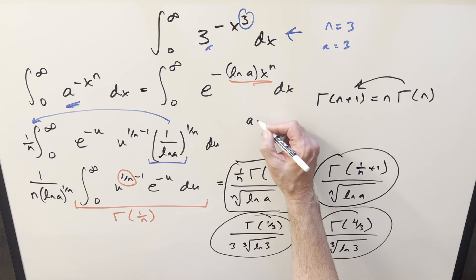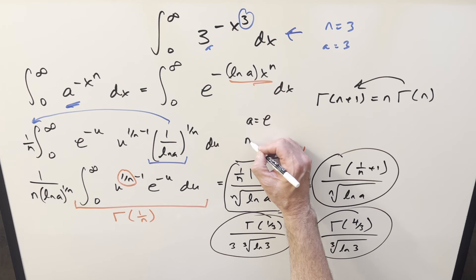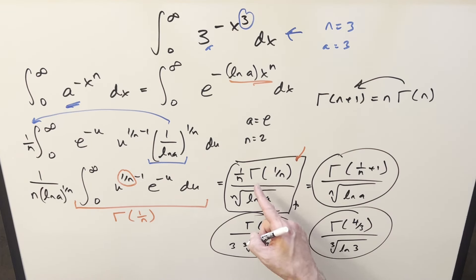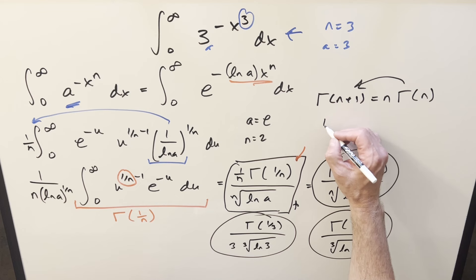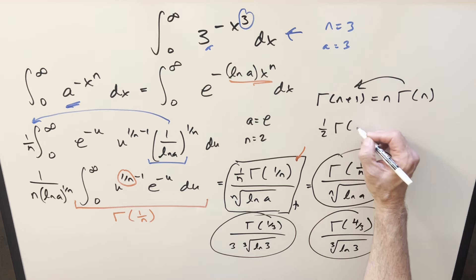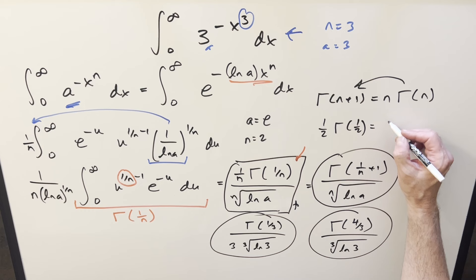And so actually for the case of just the Gaussian integral we have, a is going to be equal to e in the formula, n is going to be equal to 2. If you plug that in here, like I said, the denominator goes away, you end up with in the numerator, 1 half gamma of 1 half. But gamma of 1 half is just square root of pi. So we end up here with square root of pi over 2.